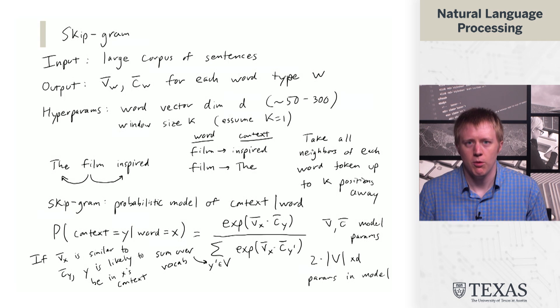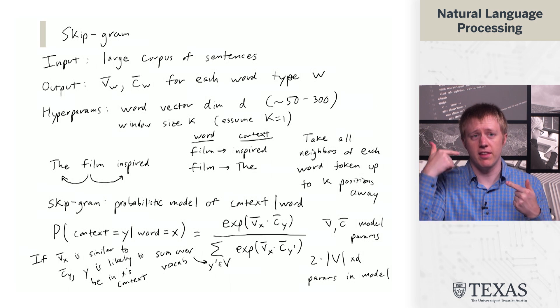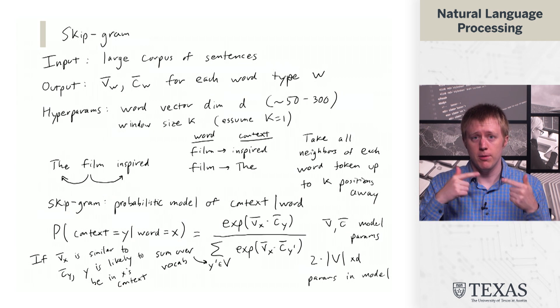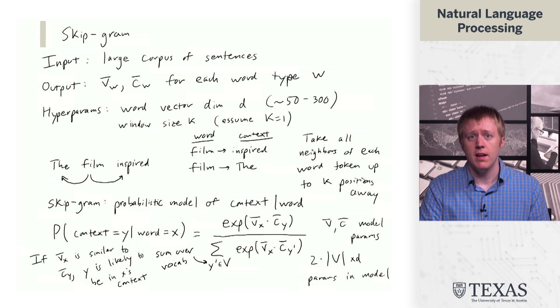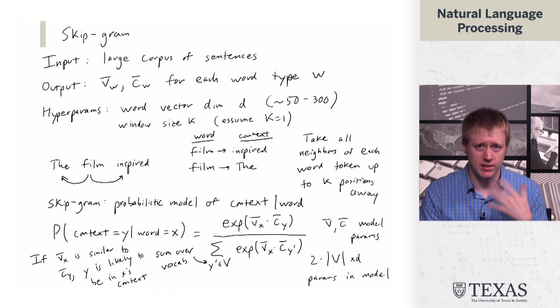And we have two different sets of parameters for one for V and one for C. So we have two times V times D parameters in this model. So now let's finally think a little bit about what this is actually saying. Basically what this model says is if VX is similar to CY, Y is likely to be in X's context.